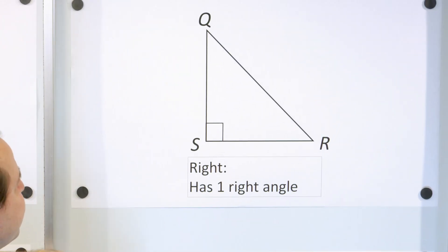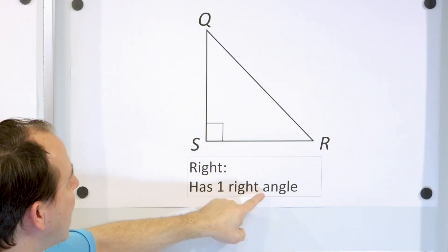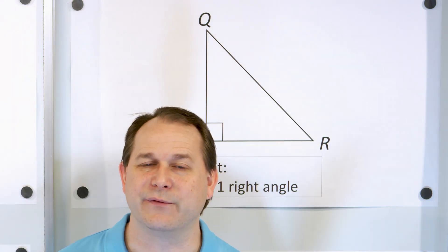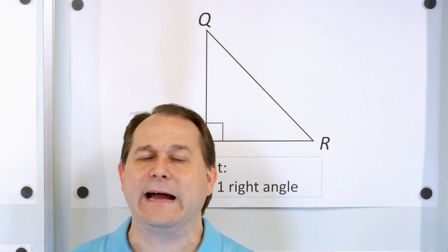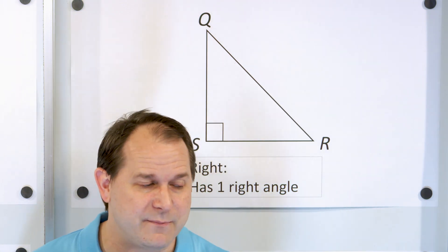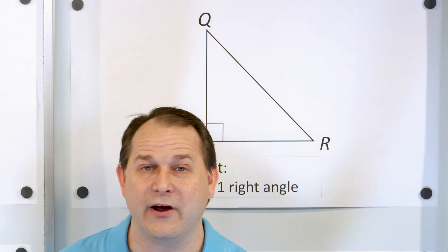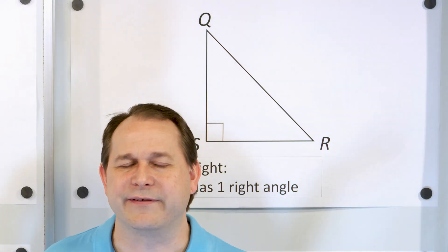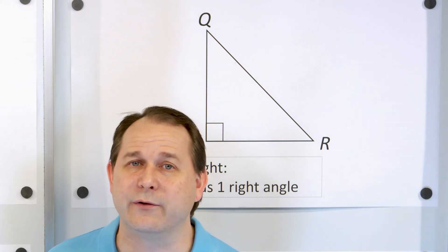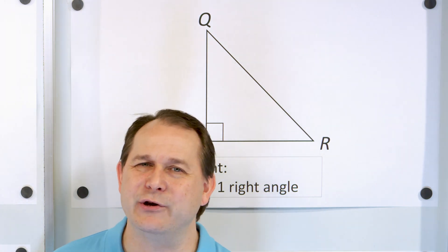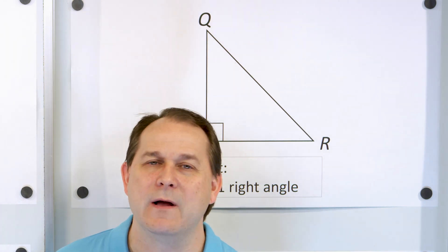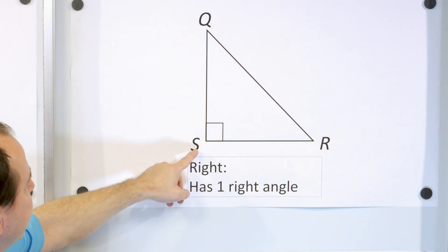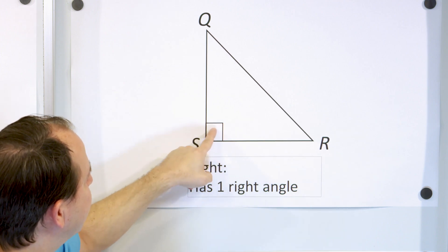Here we have another kind called a right triangle. It has one right angle — this little square symbol in the corner means 90 degrees. I can't even tell you how important it is. We have an entire course called trigonometry that is basically about learning how to use right triangles. You're never going to stop learning about right triangles. A right triangle is simply a triangle where one of the angles is 90 degrees.